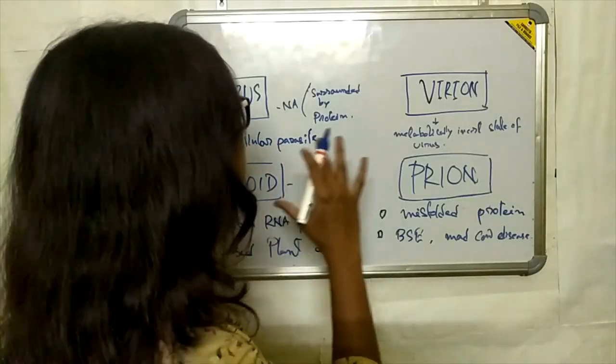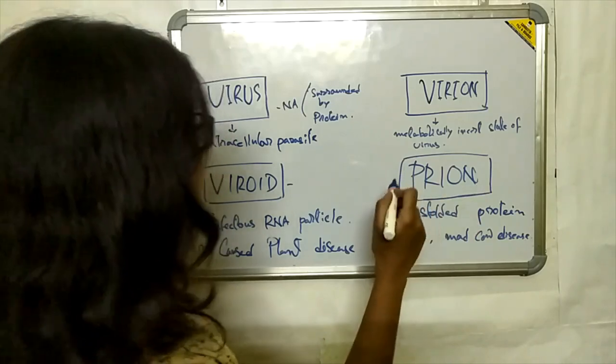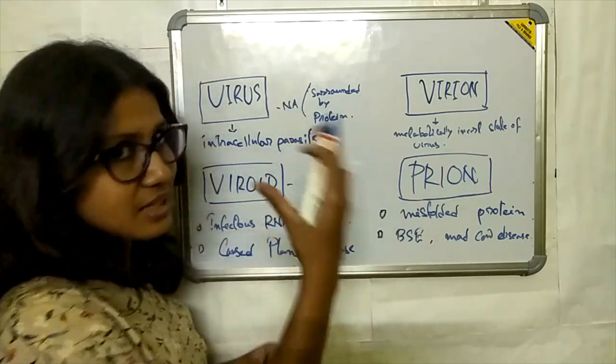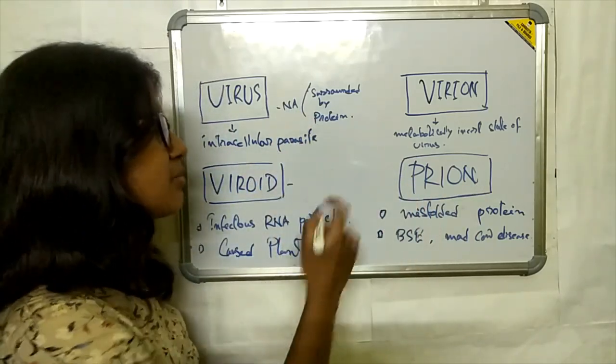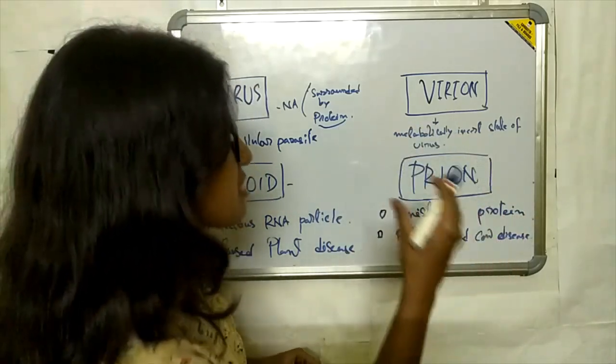So these are the basic differences between virus, virion, viroid, and prion. Viruses have nucleic acid, DNA or RNA, and are also surrounded by a protein coat. Virion is a metabolically inert state of virus.